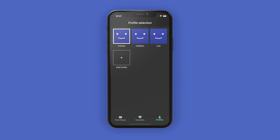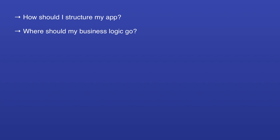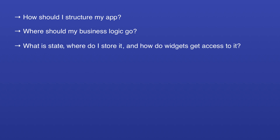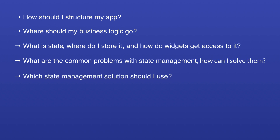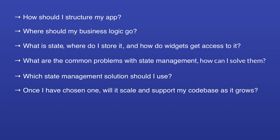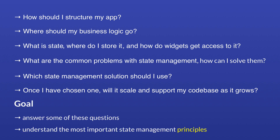So if you wanted to build an app like this, you may ask yourself a few questions. How should I structure my app? Where should my business logic go? What is state? Where do I store it, and how do widgets get access to it? What are the common problems with state management and how can I solve them? Which state management solution should I use, and once I have chosen one, will it scale and support my code base as it grows? So in this video I will try to answer some of these questions and give you a good understanding of the most important state management principles.